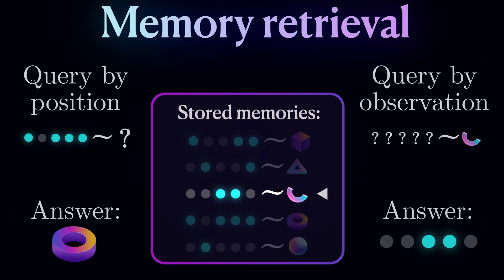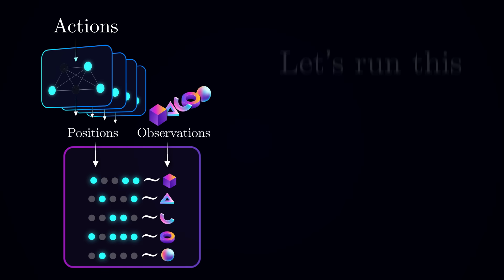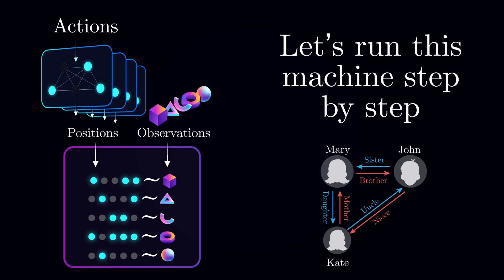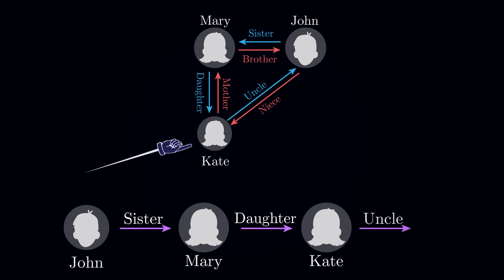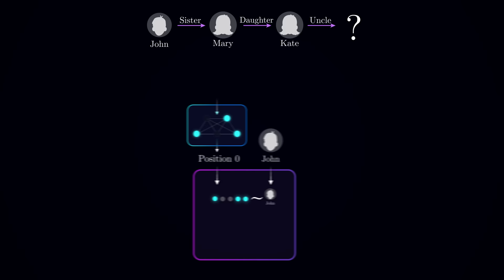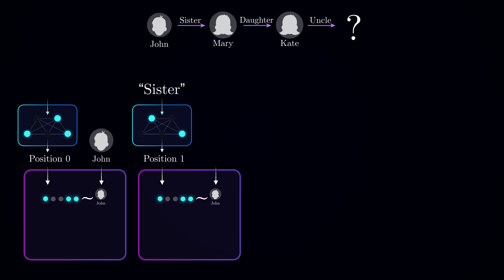Now we have all the necessary components to solve the prediction problem. Let's walk step by step through what the trained model will do to make a successful prediction when walking, for example, on a family tree. It should be capable of learning any type of structure, not just four-connected grids. So we start on John, transition to Mary via a sister action, and then to Kate via a daughter action. Finally, we give the model the action labeled uncle and ask it to make a prediction. At first, the position module has some initial belief about the current location, which is combined with John, and this combination is stored in the memory module. Next, the sister action is fed into the position module, which comes up with a new belief about location, that is combined with Mary, and the corresponding conjunction is stored in memory.